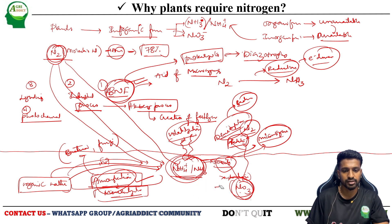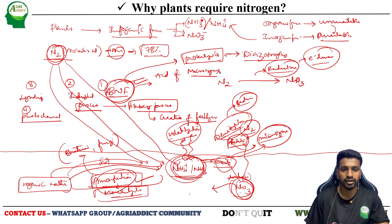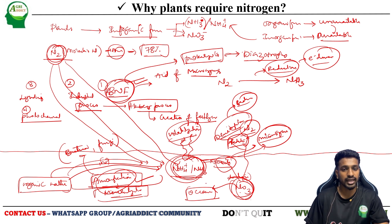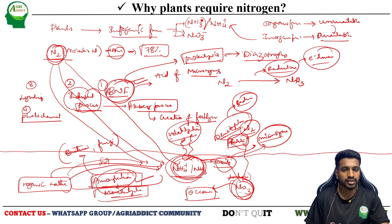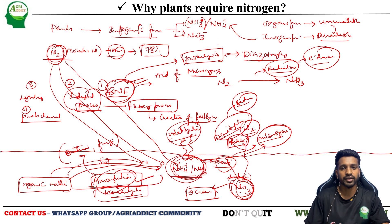Apart from volatilization, there is immobilization — the absorption of ammonium or nitrate forms by microorganisms. This is called immobilization. We also have leaching — the physical flow of nitrate dissolved in groundwater that eventually releases into the oceans. These are the different nitrogen transformation processes that occur in nature, all by natural process, apart from the industrial process.